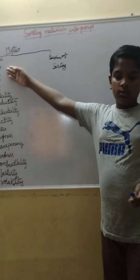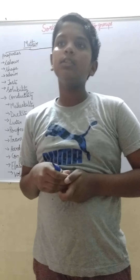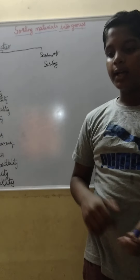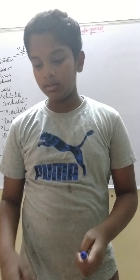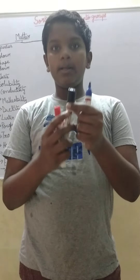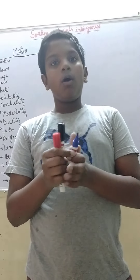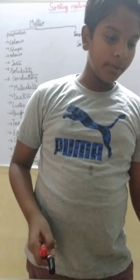Let's take color. We can sort anything by color because everything has a specific color. See, this is a black marker, this is a red marker, and this is my blue marker. All are markers, but I can sort them — blues on one side, blacks on one side, and reds on one side.